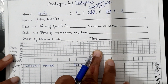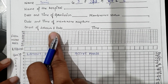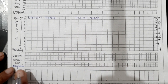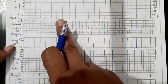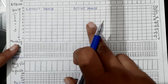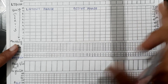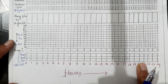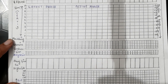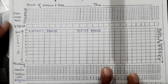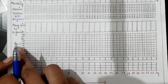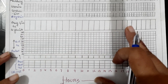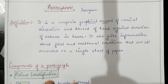Partograph consists of several parts or components like patient identification, fetal heart rate, liquor, cervical dilatation and station of head — which is noted in this portion — molding, uterine contractions, etc. The cervical dilatation is noted from 0 to 10, and the station of the head is noted from minus 5 to plus 5, recorded against the duration of labor in hours. It also consists of information on fetal and maternal conditions like fetal heart rate, maternal BP, pulse, temperature, and urine analysis for protein, acetone, and urine output — all recorded on a single sheet of paper.